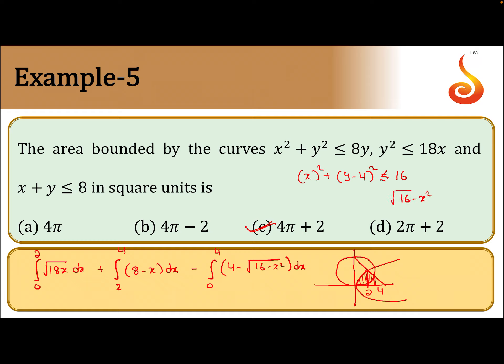√(16 - x²) = y - 4, or we can say y - 4 = √(16 - x²). This means y equals 4 plus √(16 - x²).